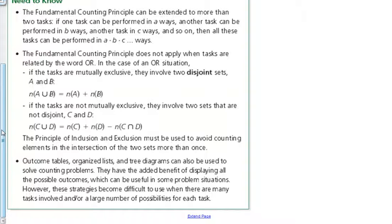The Fundamental Counting Principle does not apply when tasks are related by the word OR. In the case of an OR situation, if the tasks are mutually exclusive, they involve two disjoint sets A and B. So the number of A union B is equal to the number of A plus the number of elements in B.